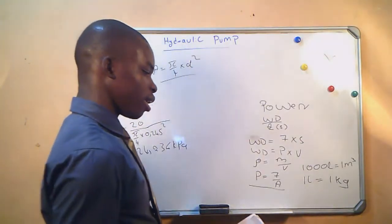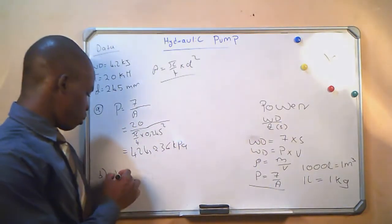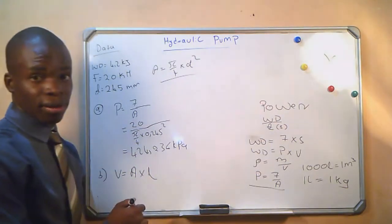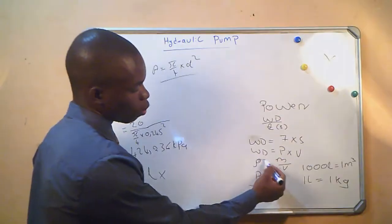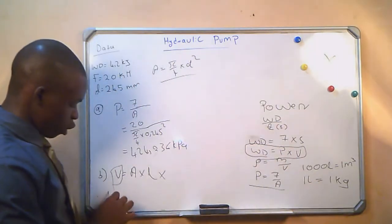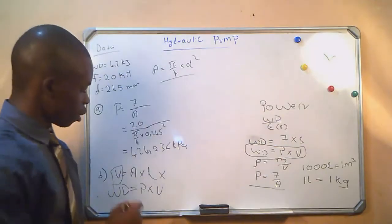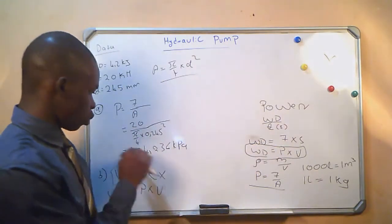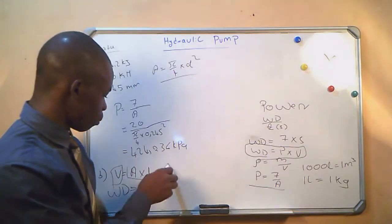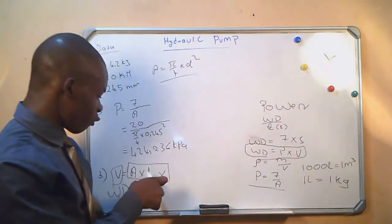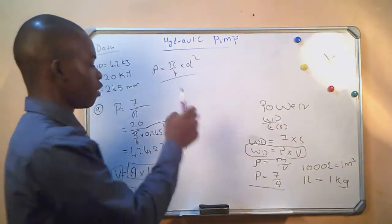Question (b): calculate the stroke length. We know we can find stroke length in the volume formula — volume equals area times stroke length — but we do not have the volume, so we cannot use that directly. We also have the formula work done equals pressure times volume. We have pressure and work done, but not volume. However, we can substitute volume with area times stroke length, where the stroke length is what we are looking for, and we do have the area since we have the piston diameter.